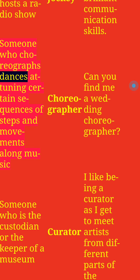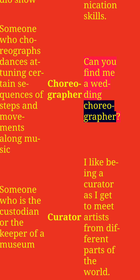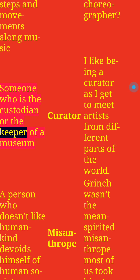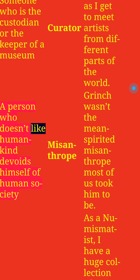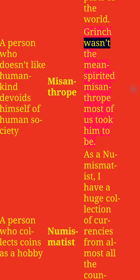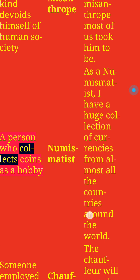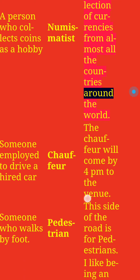Someone who choreographs dancers: Choreographer. Can you find me a wedding choreographer? Someone who is the custodian or keeper of a museum: Curator. I like being a curator as I get to meet artists from different parts of the world. A person who doesn't like humankind and avoids human society: Misanthrope. Grinch wasn't the mean-spirited misanthrope most of us took him to be. A person who collects coins as a hobby: Numismatist. As a numismatist, I have a huge collection of currencies from almost all the countries around the world.